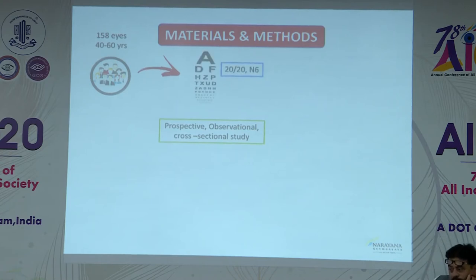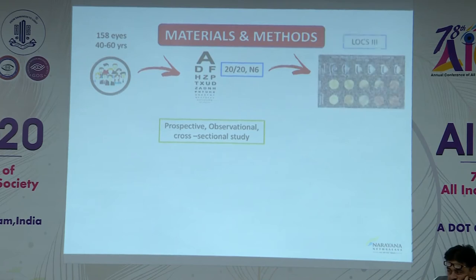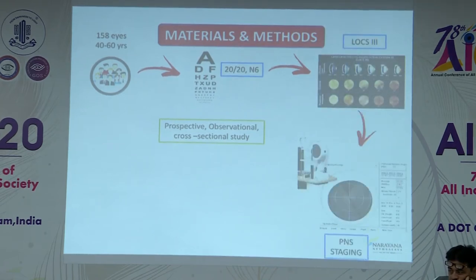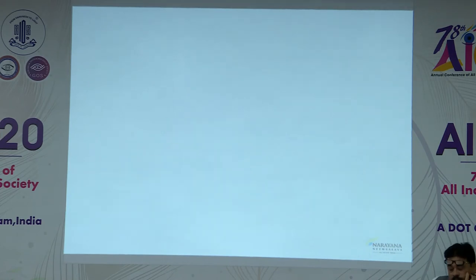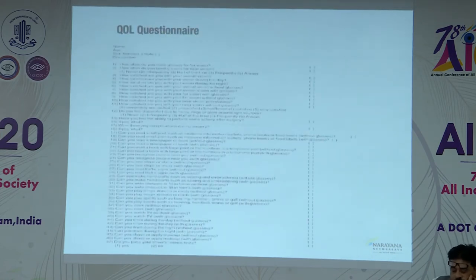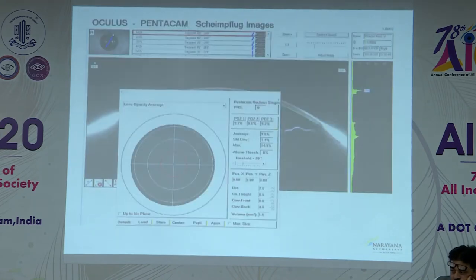This was a prospective observational cross-sectional study. All 158 patients were subjected to visual acuity, which was 6/6, followed by slit lamp grading on the basis of LOCS 3. This was followed by PNS staging on the Pentacam, and then DLI, MTF area under the curve, and internal aberrations on the i-Trace system. A quality of life questionnaire was also handed out to all 158 patients.